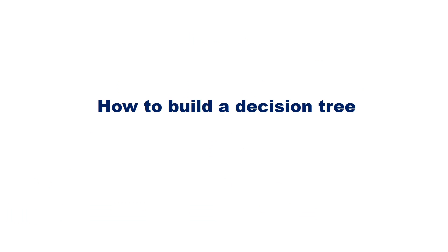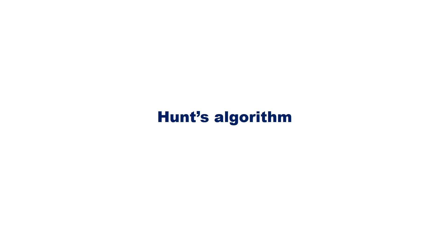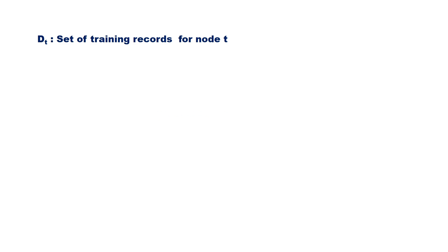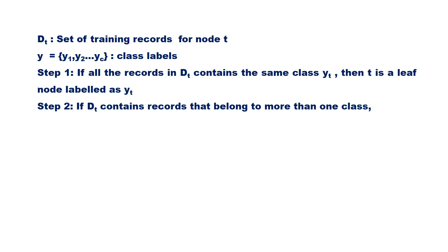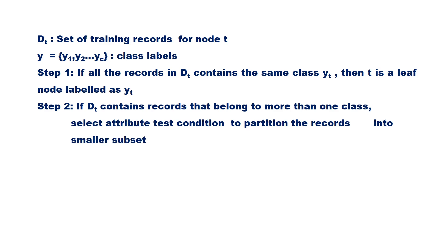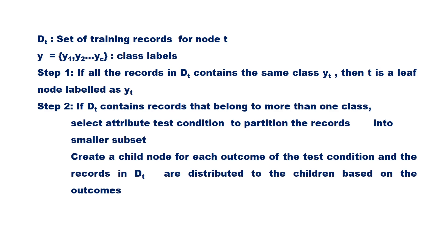Let us discuss how to build a decision tree. Hunt's algorithm is the basis for many existing decision tree induction algorithms. Let Dt be the set of training records associated with node t, and Y = {y1, y2, ..., yc} be the class labels. Step 1: if all records in Dt contain the same class yt, then t is a leaf node labeled yt. Step 2: if Dt contains records belonging to more than one class, an attribute test condition is selected to partition the records into smaller subsets, and the algorithm is recursively applied to each child node until a leaf node is found for each branch.